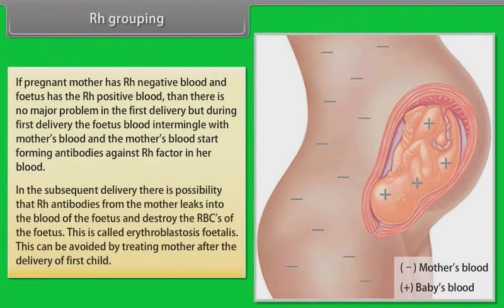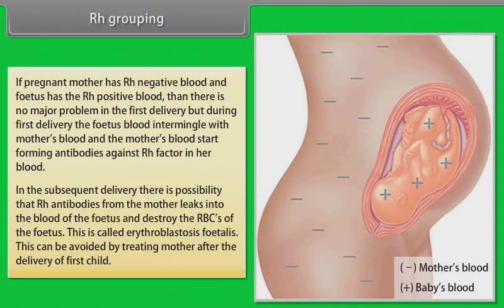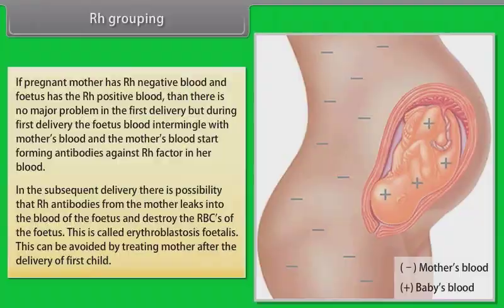In subsequent deliveries, there is a possibility that RH antibodies from the mother leak into the blood of the fetus and destroy the fetus's RBCs. This condition is called erythroblastosis fetalis, and can be avoided by treating the mother after delivery of the first child.